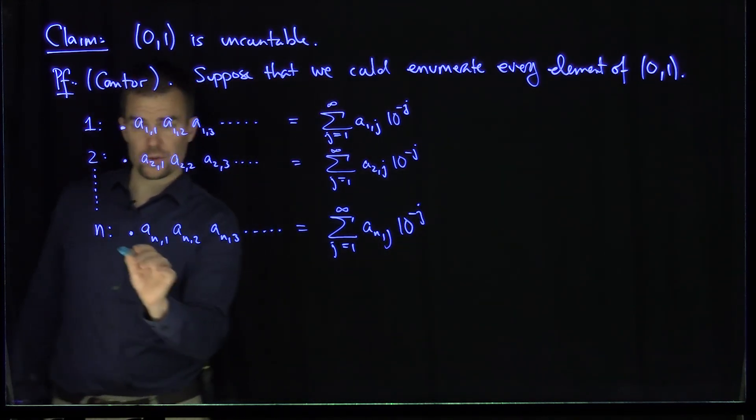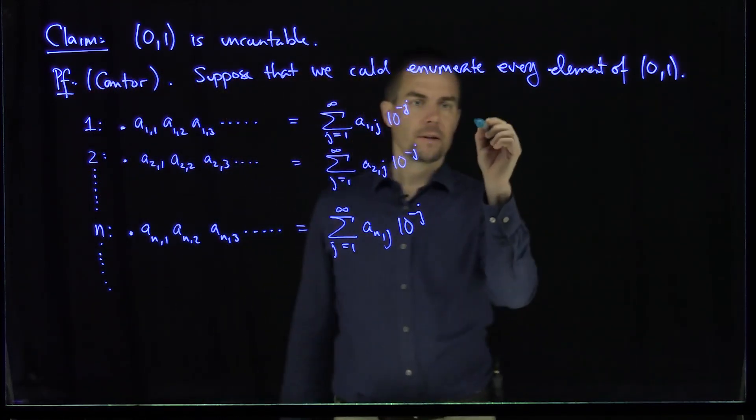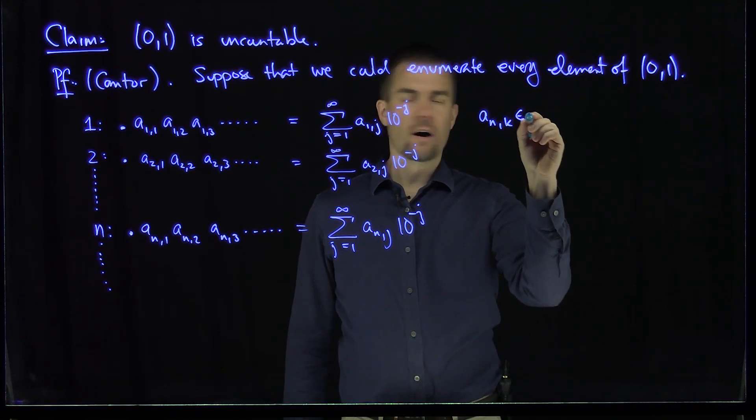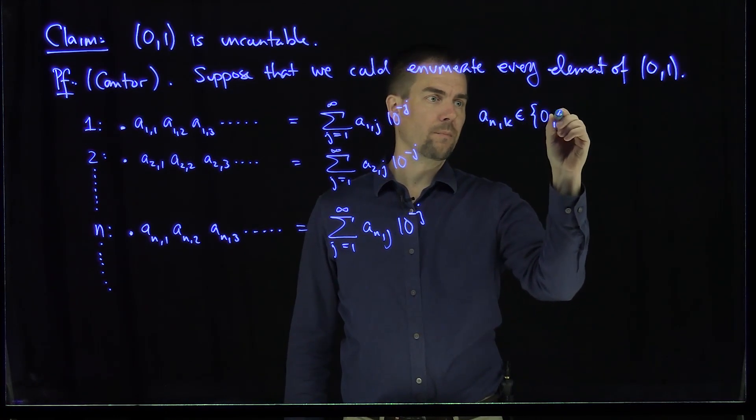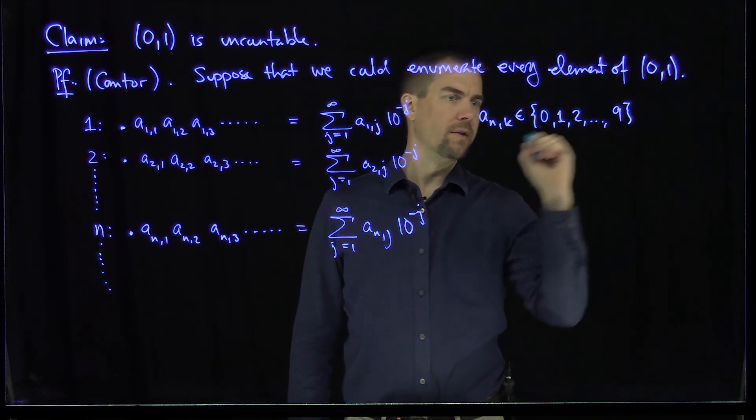So those are our decimal expansions. This process goes on forever. I've enumerated all of them. We know that these a_n_k are elements of the set 0, 1, 2, all the way up to 9.